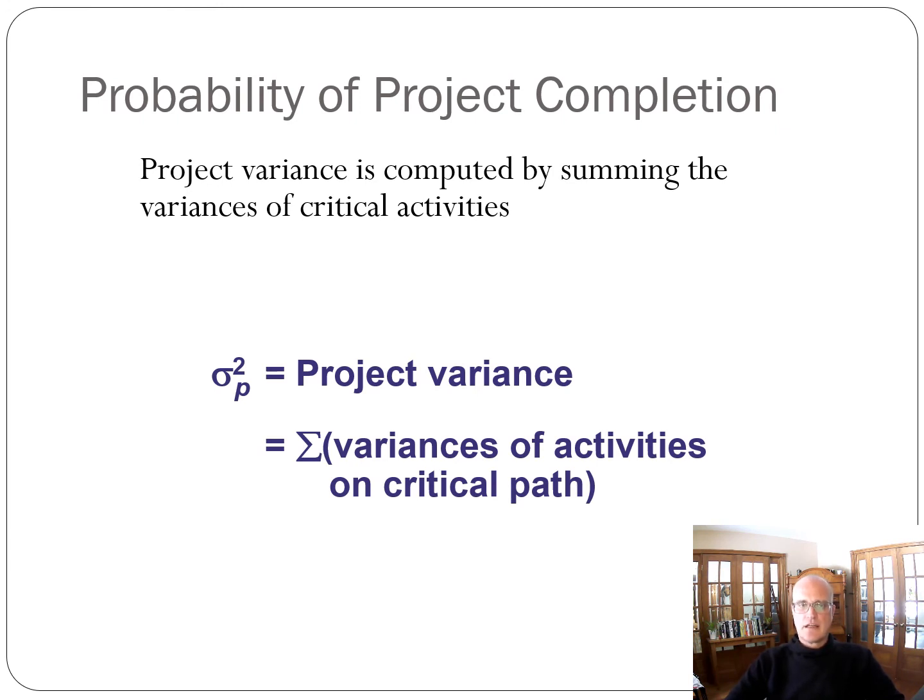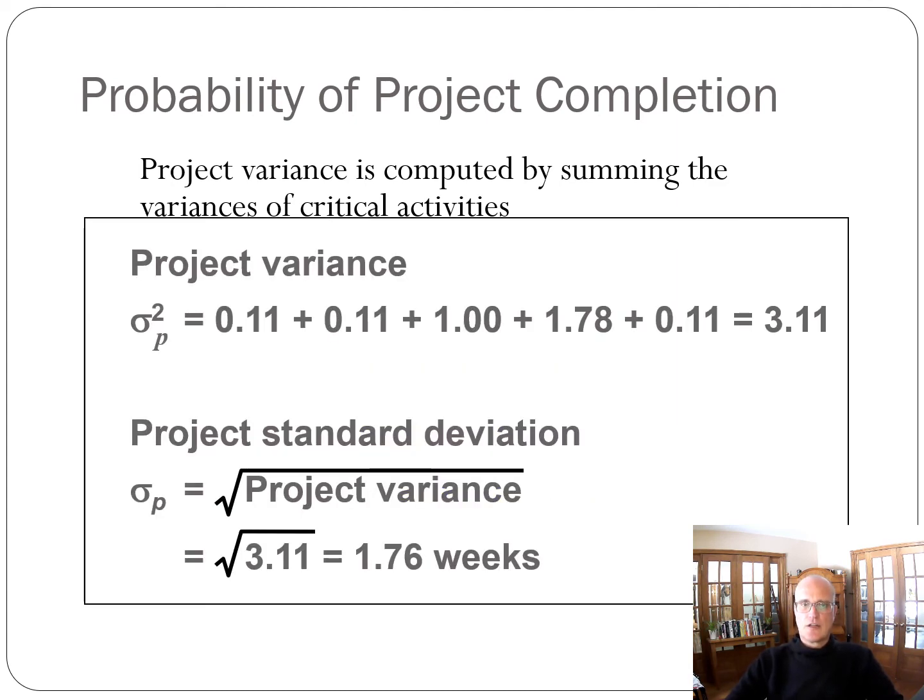And so then, the probability of project completion is the type of question you might get. Project variance is computed by summing the variances of critical activities. In this case, we've got 0.11 plus 0.11 plus 1 plus 1.78 plus 0.11. This is a project, we haven't seen it here, but this is the critical path. We just sum them up, and then the project variance in this case is 3.11. And the project standard deviation, which we will need for our calculations later, is just the square root of the variance, is 1.76.